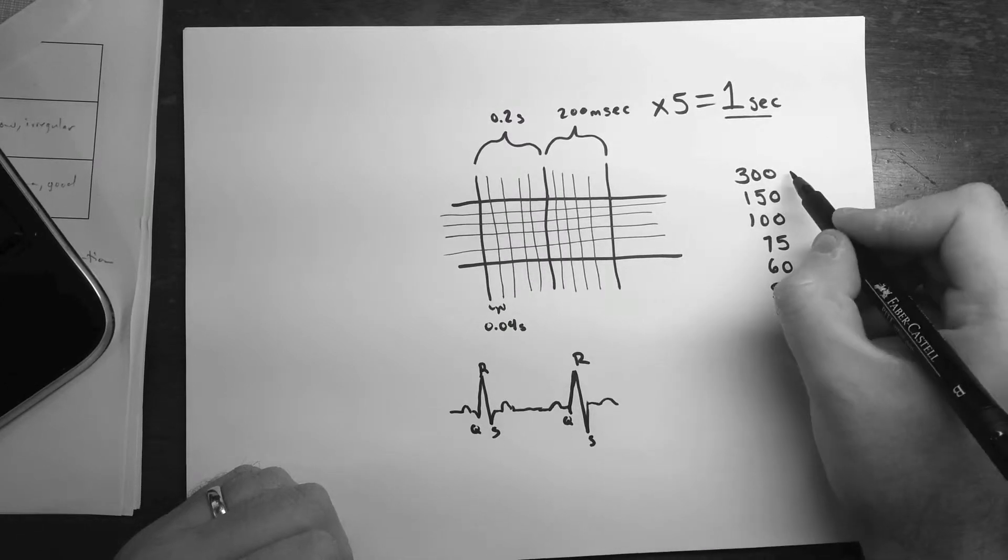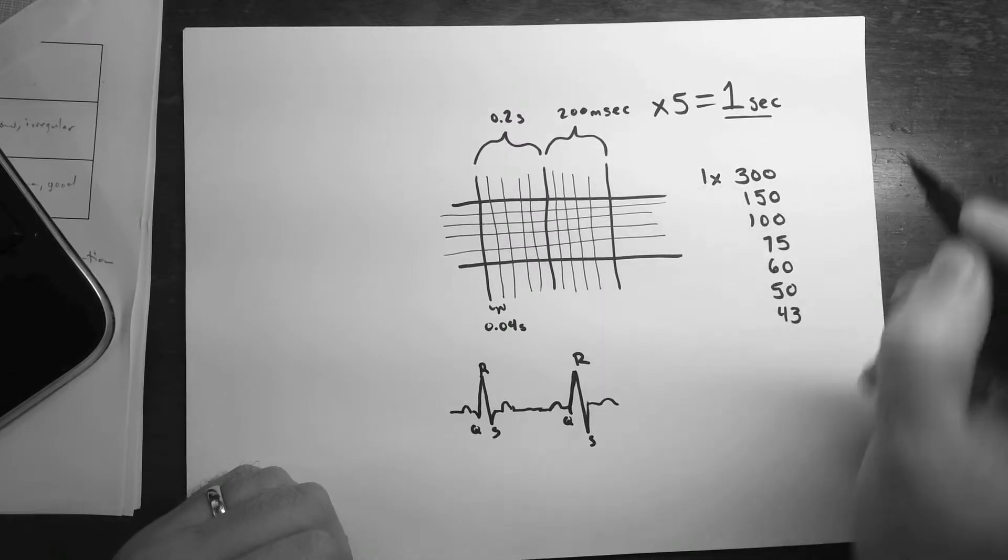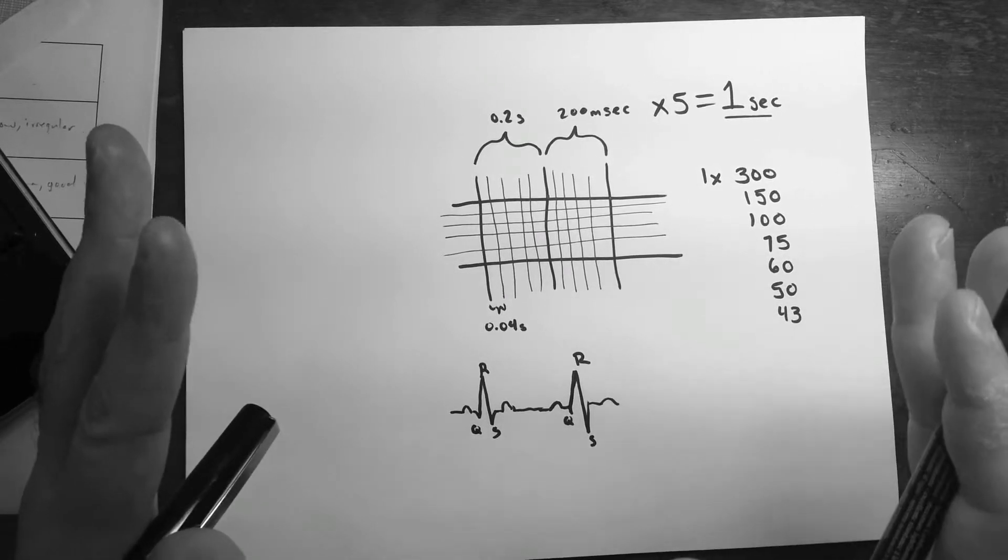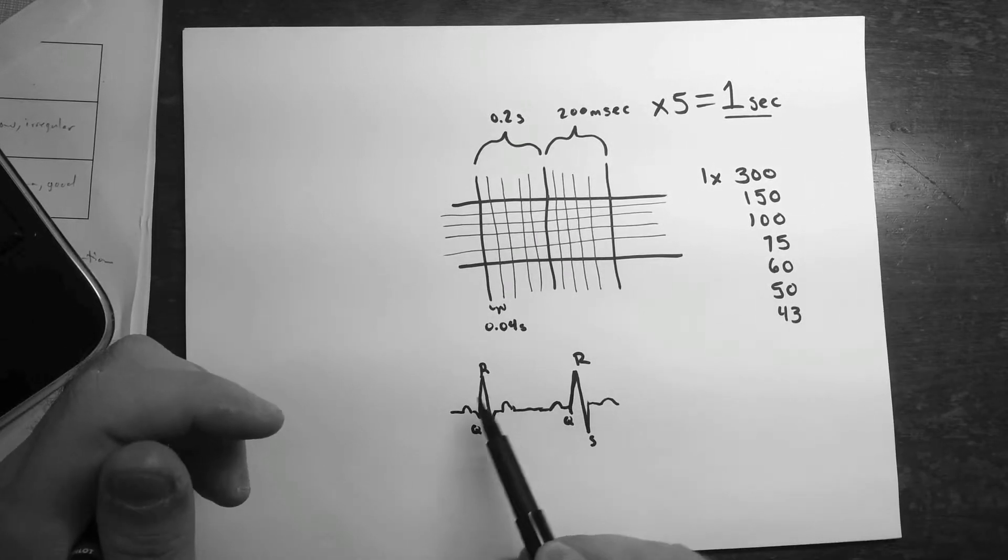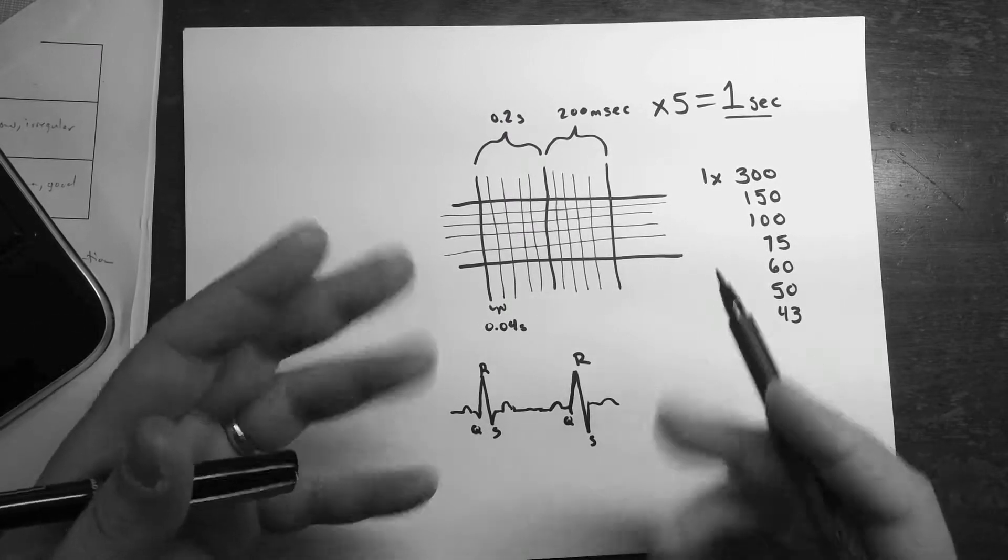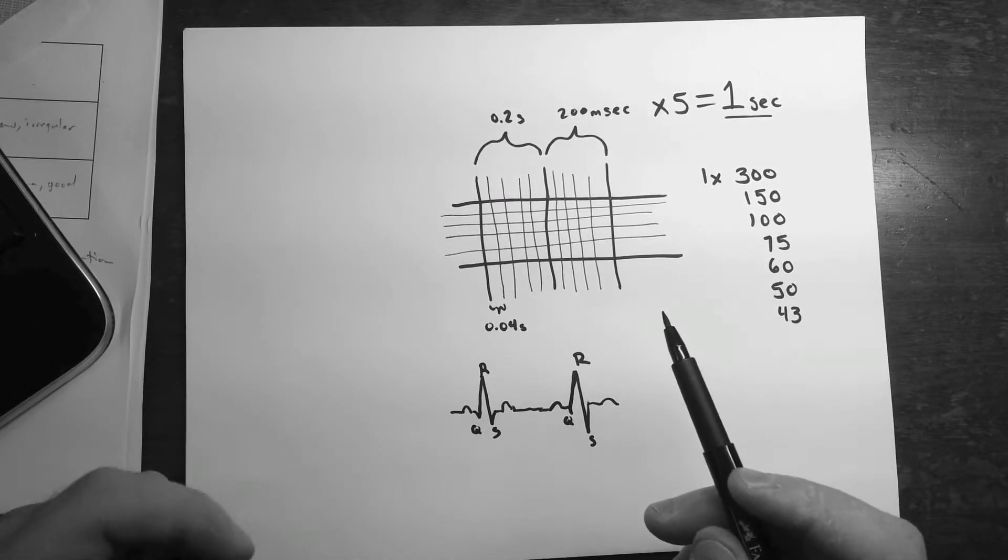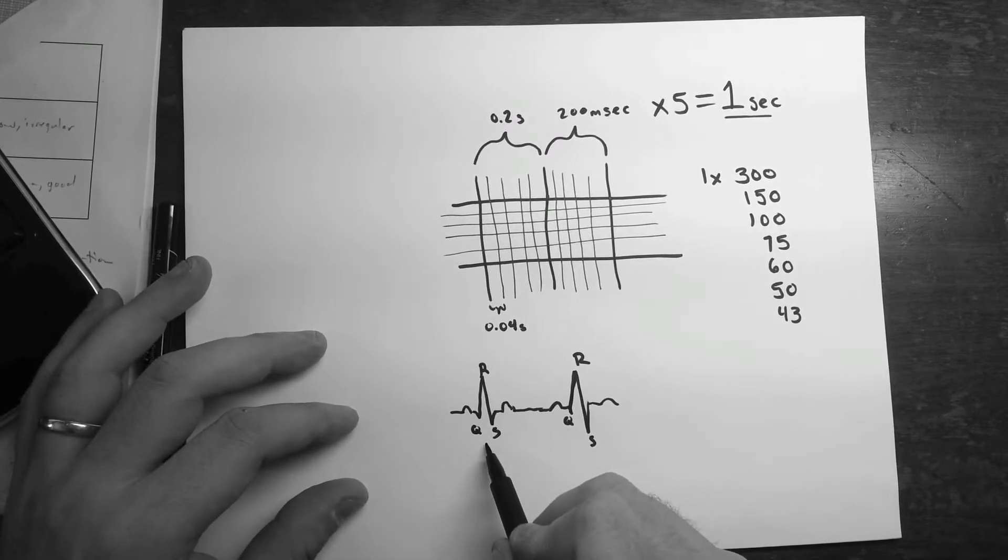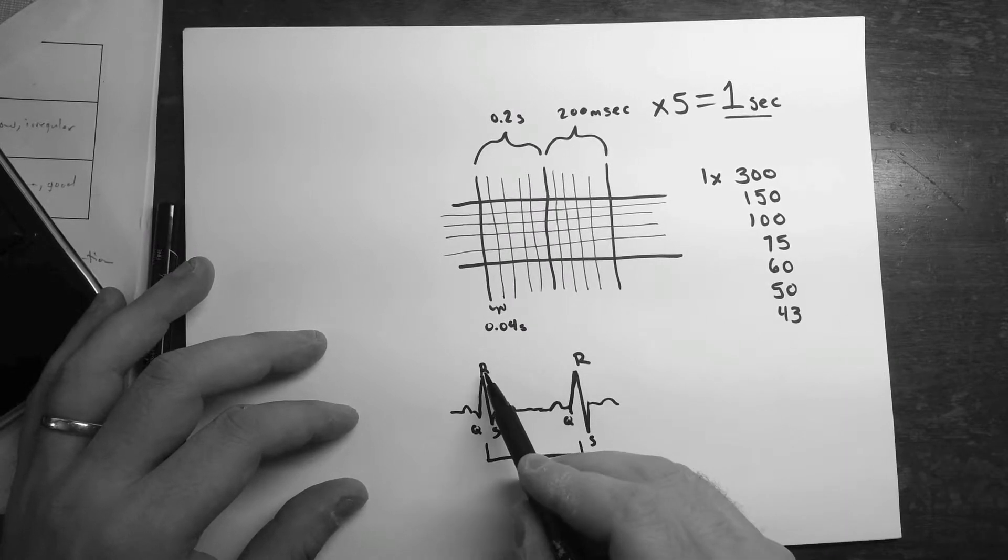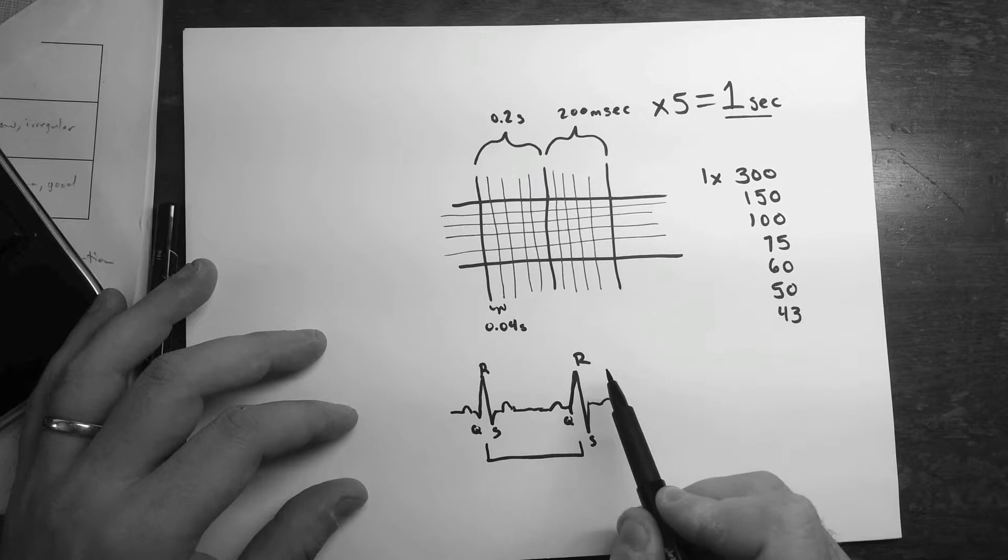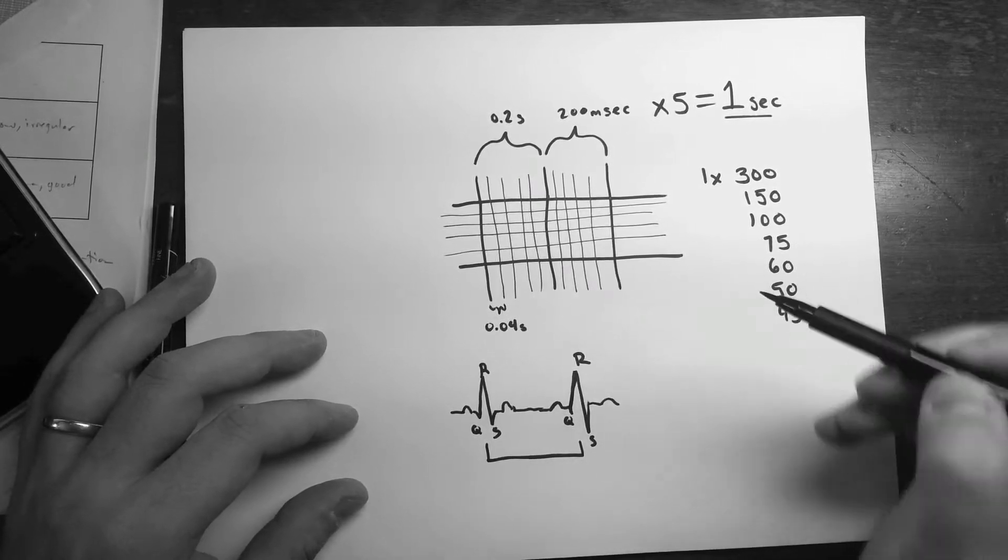So if we have just one large box in between them, and this is all depending on the rate being regular. So this interval doesn't change a whole lot. If it changes a whole lot, then you're going to have to average it. But if not, if it's pretty steady, then you can just go ahead and say if this is just one box in difference from any one of these points, R to R, Q to Q, S to S, just pick one and go with it. The easiest one is usually just go with the R.